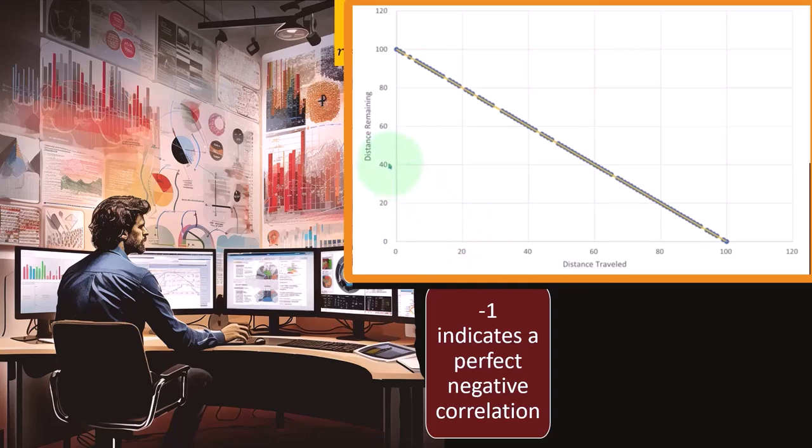One example would be the distance traveled versus the distance remaining. If you're going on a trip that is 100 miles and you travel 20 miles, then it would go from 100 down to 80. If you went to 40 miles that you traveled, then the distance remaining would be 60. If you went 60 miles, the distance remaining would be 40.